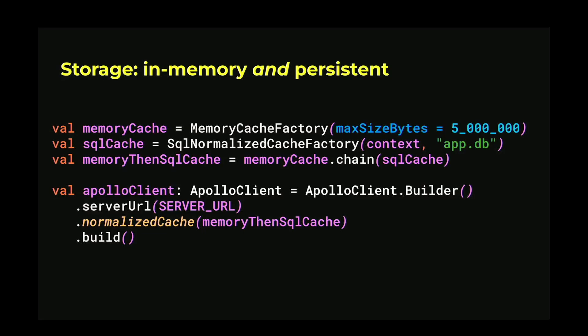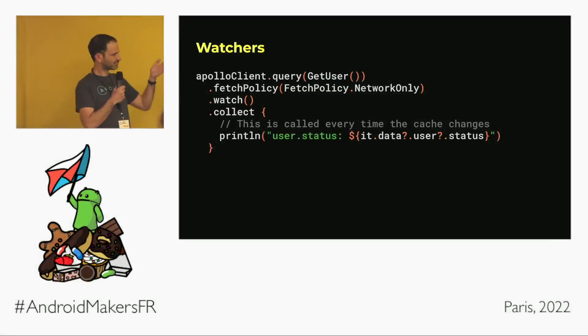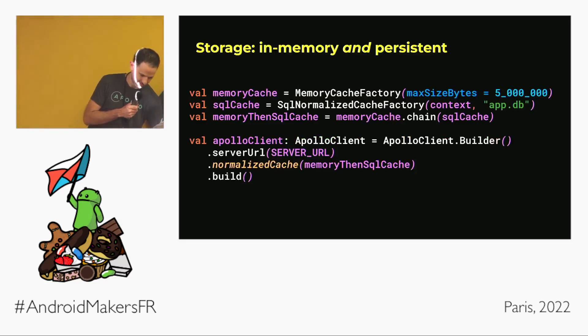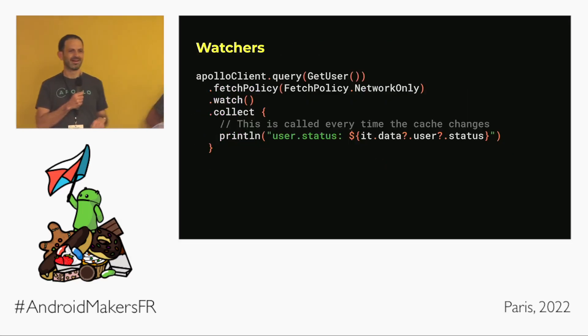There are other cool things you can do once you have a cache. To recap: we've seen what GraphQL is, how it compares to REST, and how using very simple data structures we can store everything once without duplication using IDs. Benoit explained how tooling can take that unsafe representation and turn it into type-safe models, and how to set up your normalized cache.